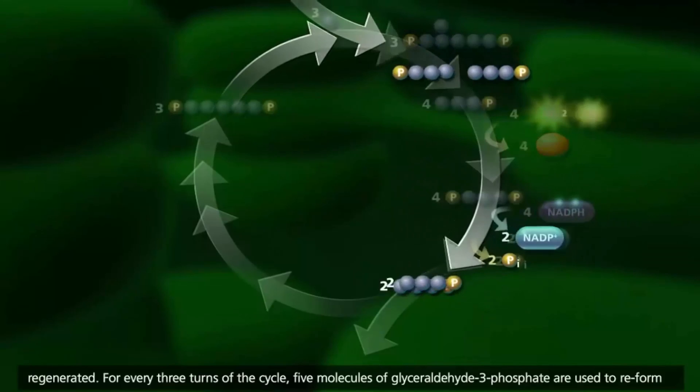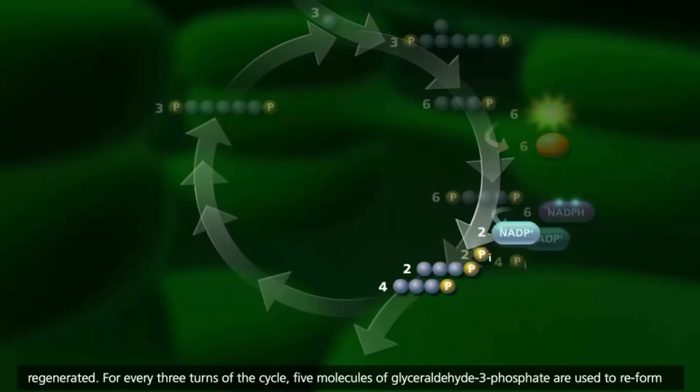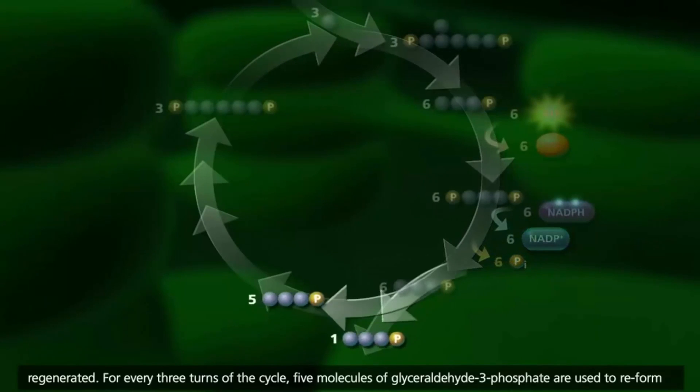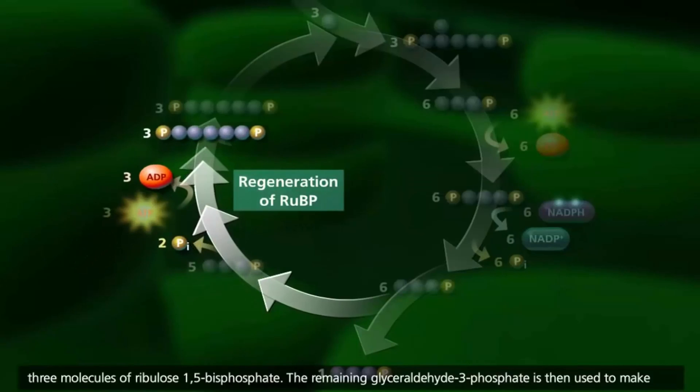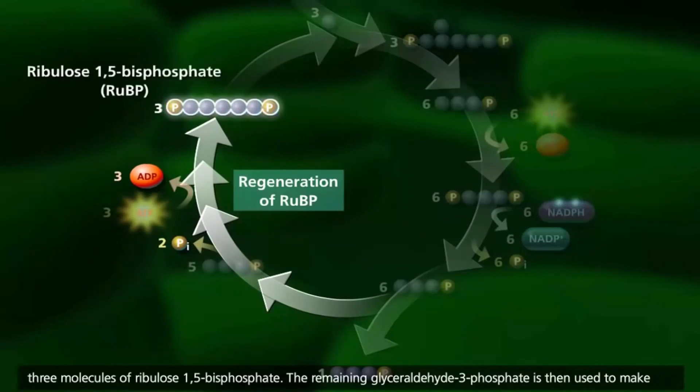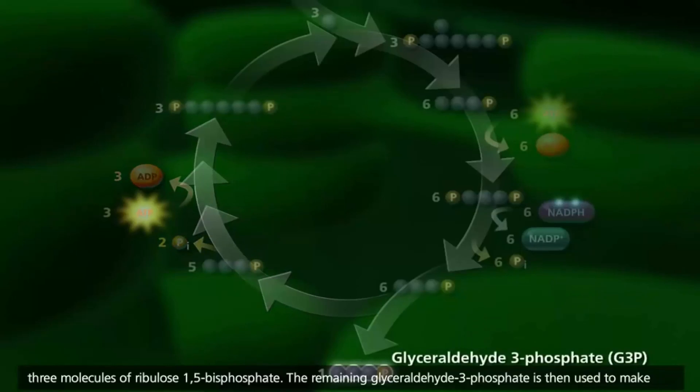For every three turns of the cycle, five molecules of glyceraldehyde-3-phosphate are used to reform three molecules of ribulose-1,5-bisphosphate. The remaining glyceraldehyde-3-phosphate is then used to make glucose, fatty acids, or glycerol.